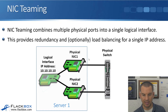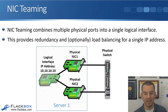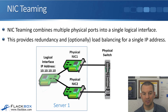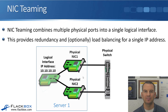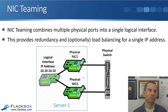Looking at the example in the diagram, I've got my server with two physical NIC ports bundled into a logical interface, and I can put my IP address 10.10.10.10 onto that logical interface. If I hadn't bundled them, I could have 10.10.10.10 on NIC1 and 10.10.10.11 on NIC2, which gives some redundancy but requires clients to use two different IP addresses, which is awkward.